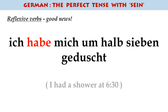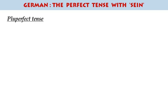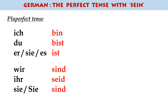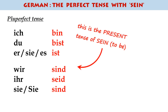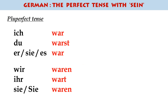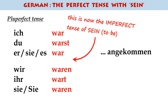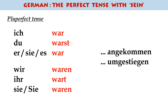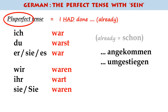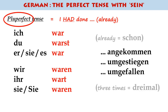One final, possibly useful thing to know: if you replace sein here with the imperfect form of the verb instead of the present tense — so instead of ich bin, du bist, er ist — you replace it with ich war angekommen or er war schon umgestiegen, meaning 'he had already changed trains', then you'll notice that you've pushed it further back into the past. That means it had already happened before the events you're talking about, and we call that the pluperfect tense. So 'I had already arrived' is ich war schon angekommen, and 'He had already fallen over three times before this' is er war schon dreimal umgefallen.